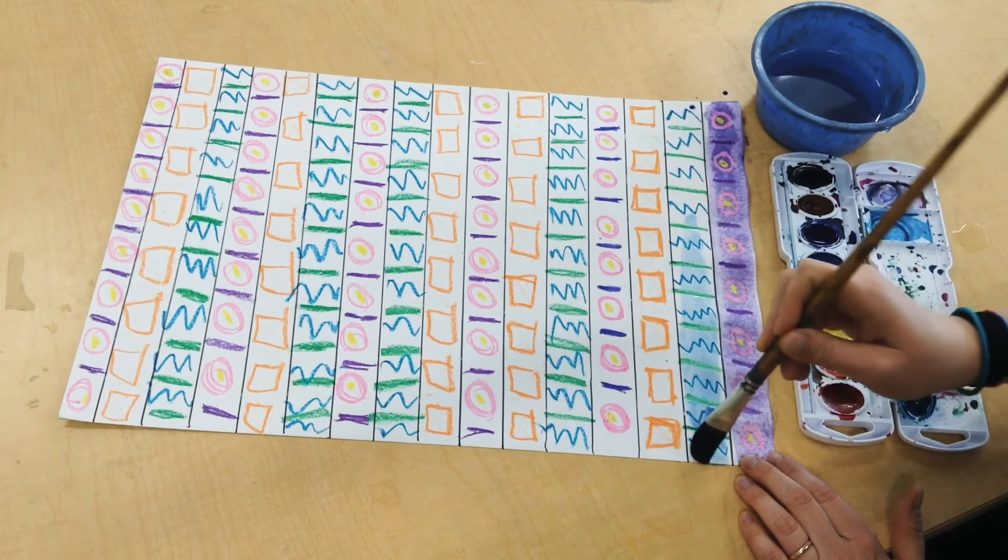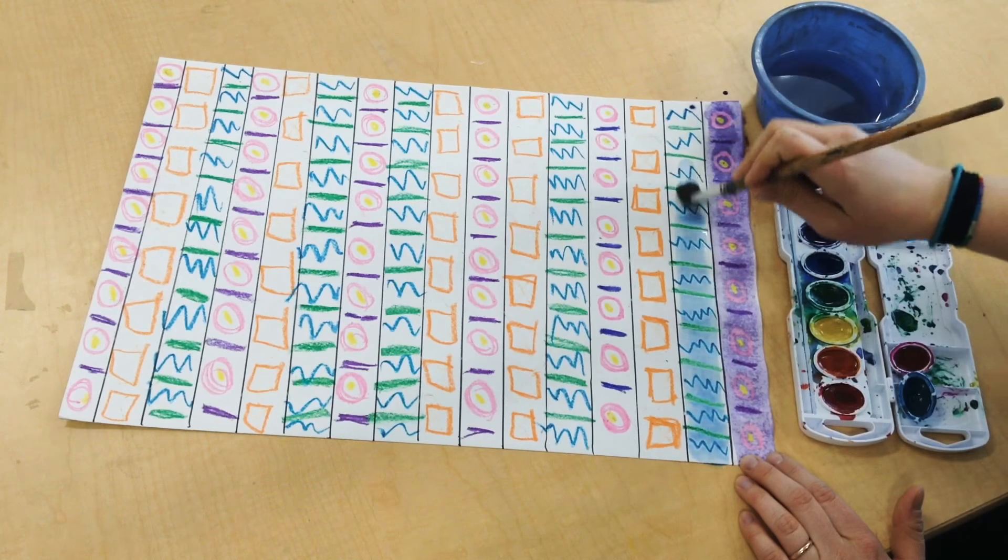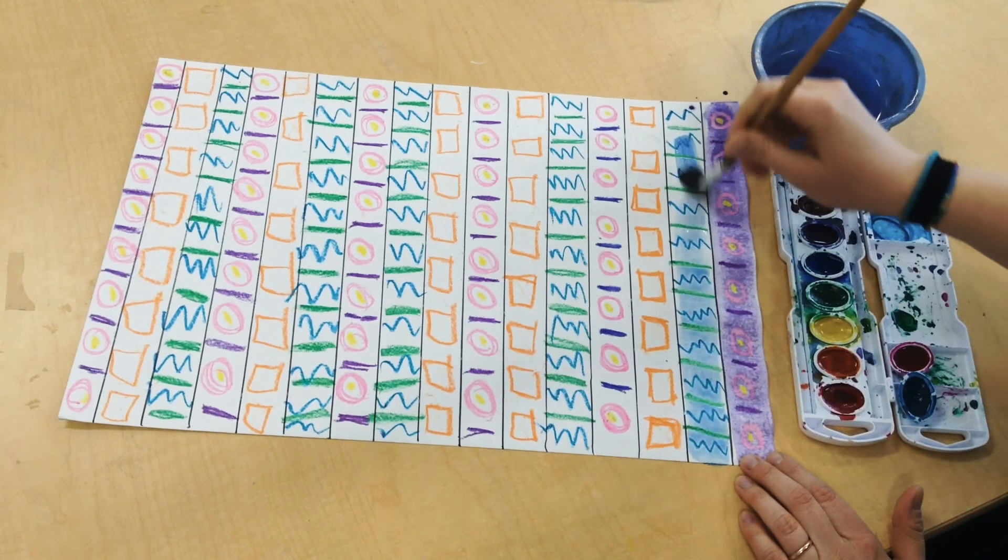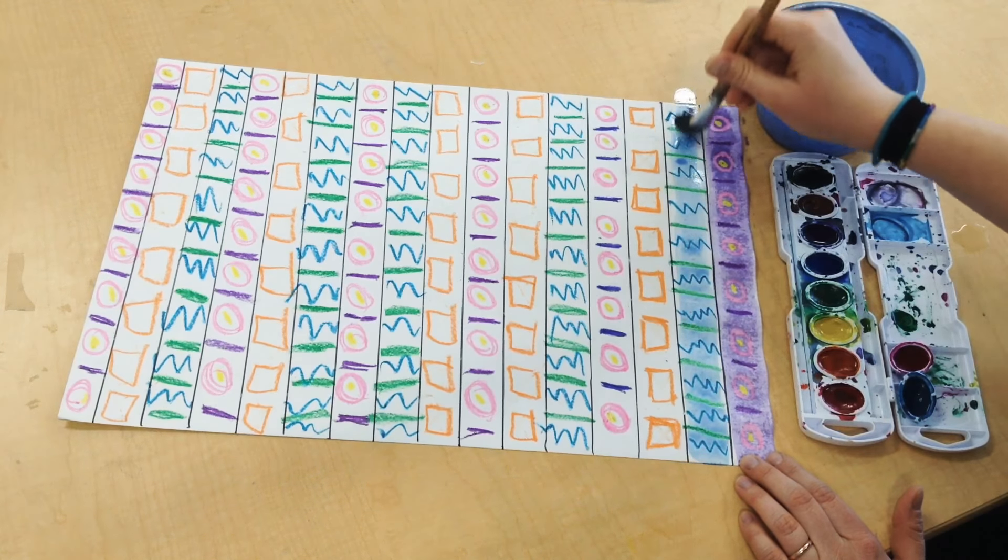So I'm going to do an A, B, C pattern with my colors as well. My pattern is going to be purple, blue, and then pink.